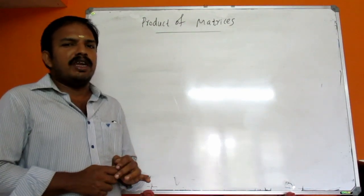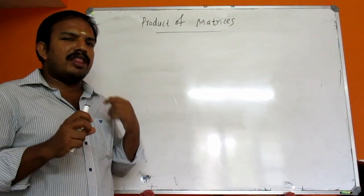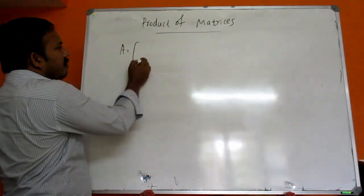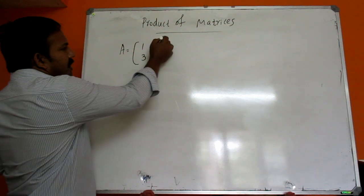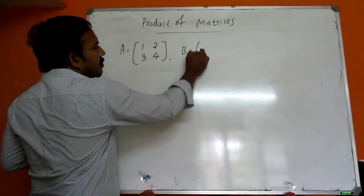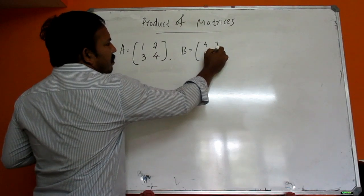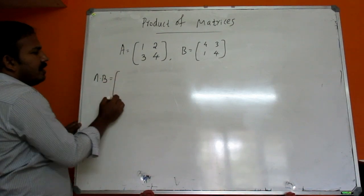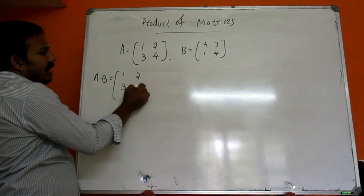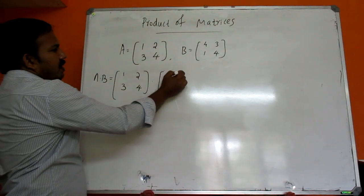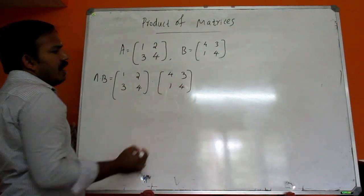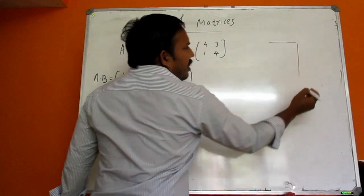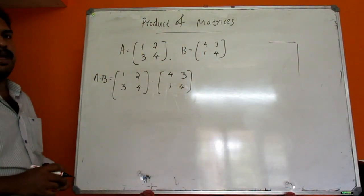We can see the same structure of the matrix. For example, A is equal to [1, 2; 3, 4] and B is equal to [4, 3; 1, 2]. A into B is the product. The product follows a direct rule.